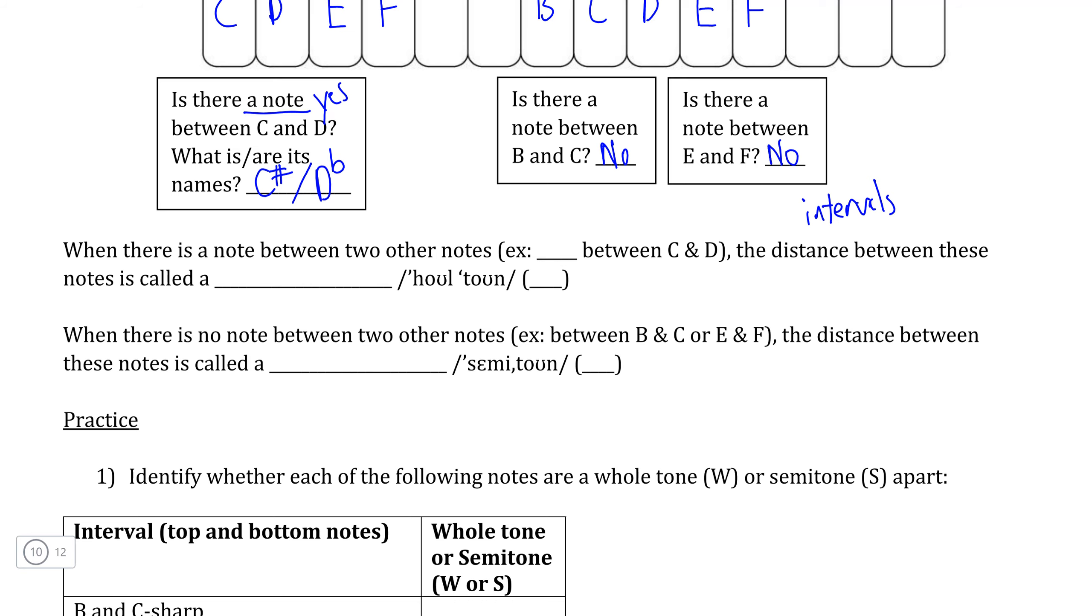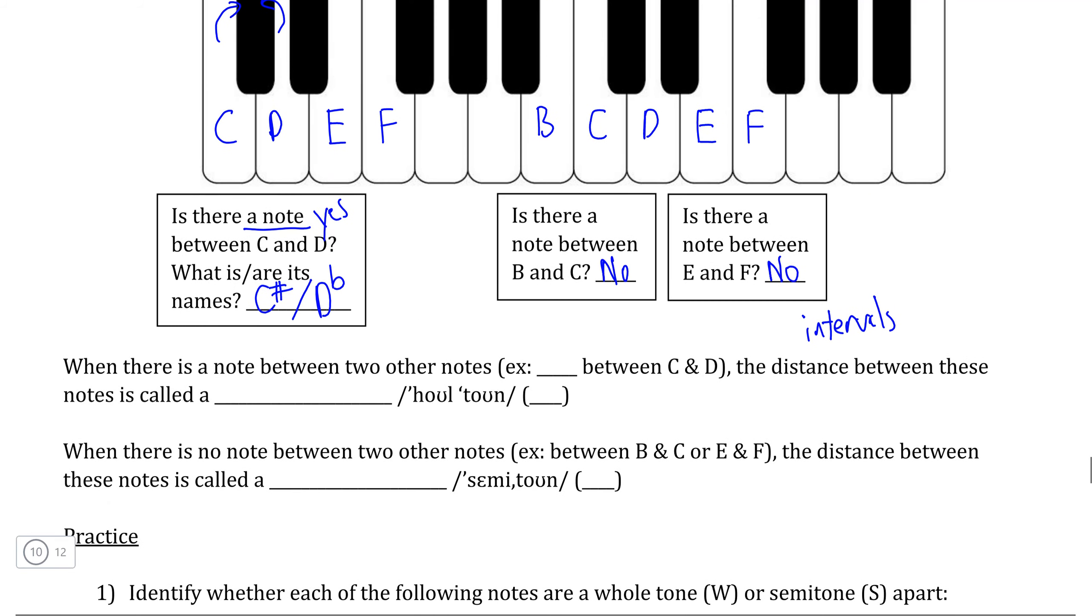Now there are two names that we can learn to describe the distances between pitches like C and D, where there is a pitch in between two other pitches. For example, C sharp or D flat between C and D. The distance between C and D is what we call a whole tone, although musicians often simply notate this as W, W for whole.